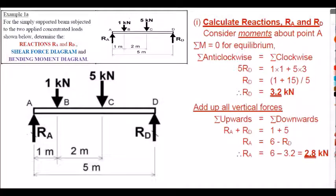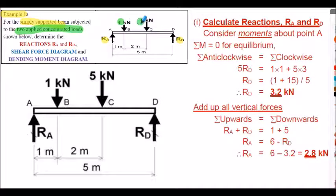Here's a typical analysis — Example 1A. In each beam problem, we go through the same process: calculate the reactions using a standard method, work out the shear force distribution, work out the bending moment distribution, then sketch both diagrams. Example 1A is a simply supported beam with reactions RA and RD, and two concentrated point loads. We need to calculate reactions RA and RD, the shear force diagram, and the bending moment diagram.